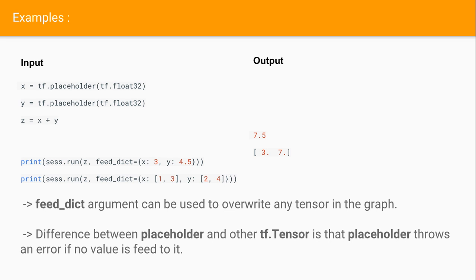This is an example of a placeholder. We have declared variable x equals tf.placeholder of data type float32, y of data type float32, then we have added z equals x plus y. Then print session.run, we have given the argument z and feed_dict.